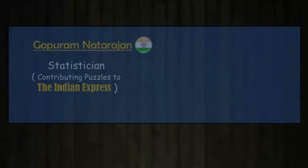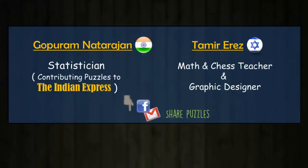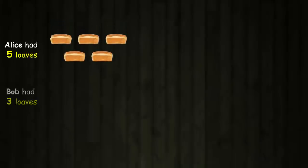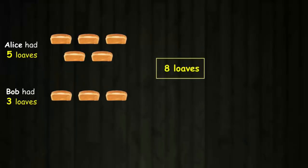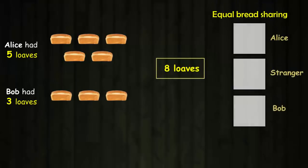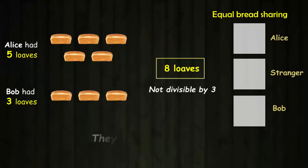I'd like to thank Gopuram and Tamir for sharing this tricky math riddle. Alice had five loaves of bread and Bob had three. Overall, they had eight loaves of bread. The bread was shared equally among the three persons. Since eight is not divisible by three, they should have split one or more loaves into multiple pieces. The trick here is to identify the best splitting approach.